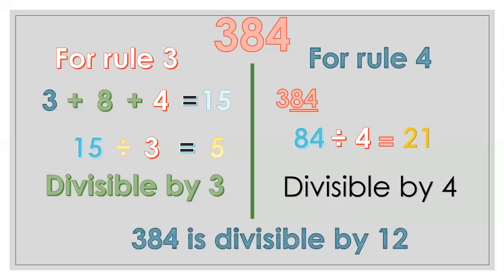So it means 384 is divisible by 12 because it met both criteria — divisible by 3 and divisible by 4. Let's give another example.